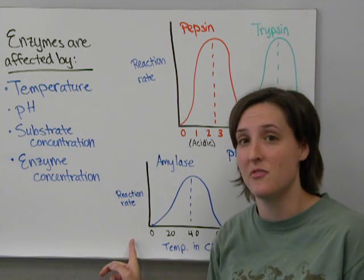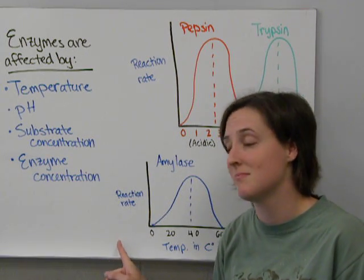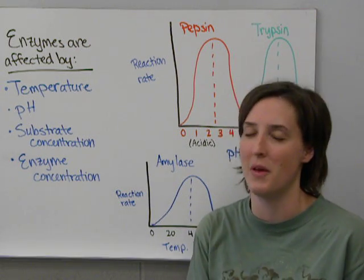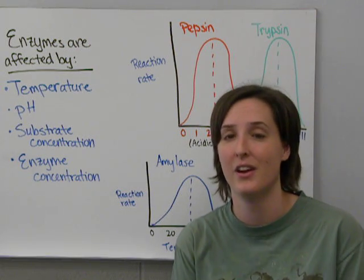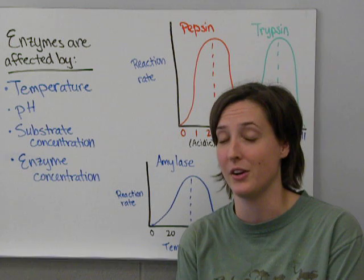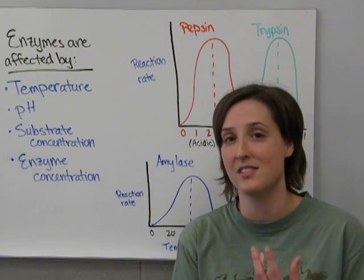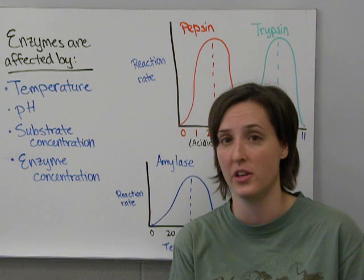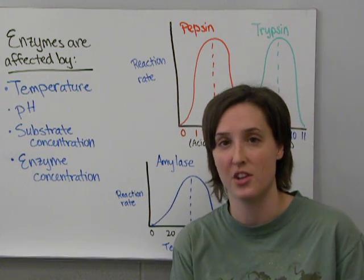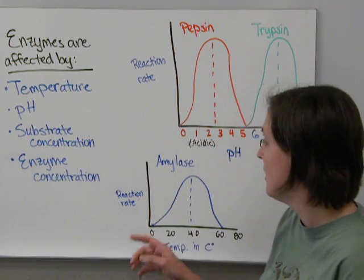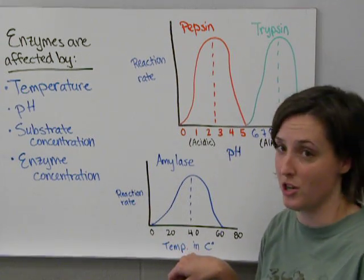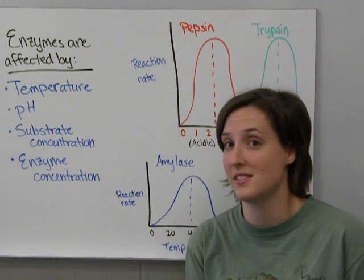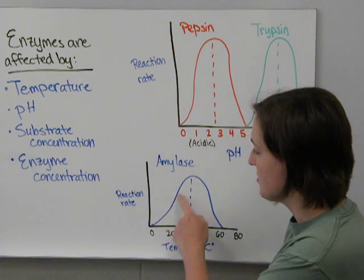Another enzyme found in the mouth is amylase. Amylase is what breaks down starch. Imagine you're chewing on a piece of bread or a cracker — amylase is the enzyme in your mouth that breaks down those starch molecules into smaller sugar molecules, basically pre-digesting your food. In terms of temperature, amylase functions best at about 40 degrees Celsius — that's its optimal range.